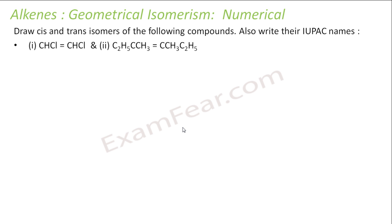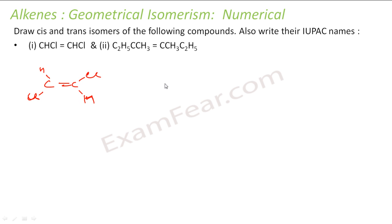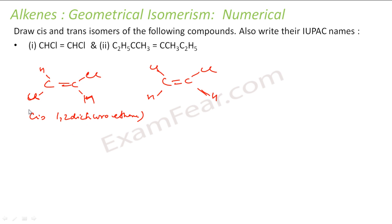Let's see some examples — we will draw the cis and trans isomers for the following compounds. For CHCl=CHCl, I have one carbon with a chlorine and one isomer where it is trans. The other can be cis, where I have both chlorines on one side and both hydrogens on one side. So this is cis-1,2-dichloroethene, and the other is trans-1,2-dichloroethene — the name is the same but with cis or trans prefix.